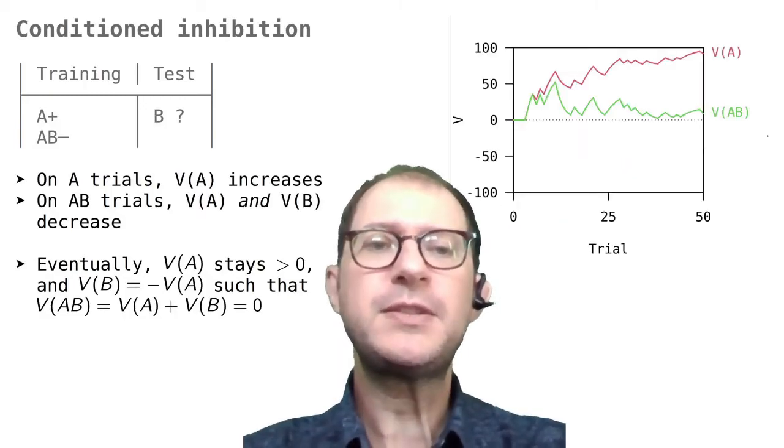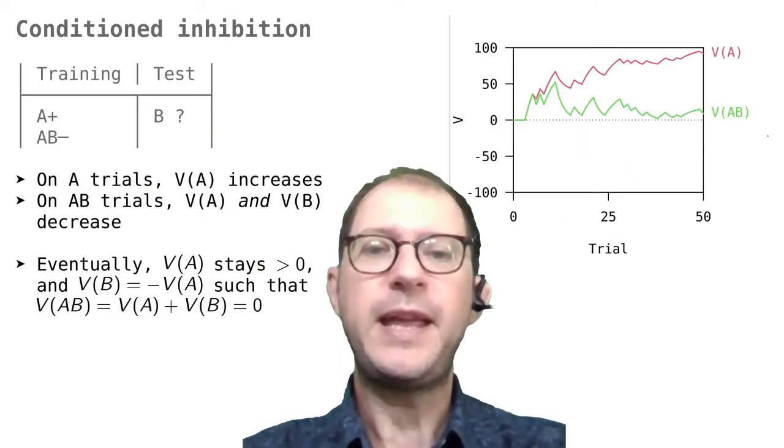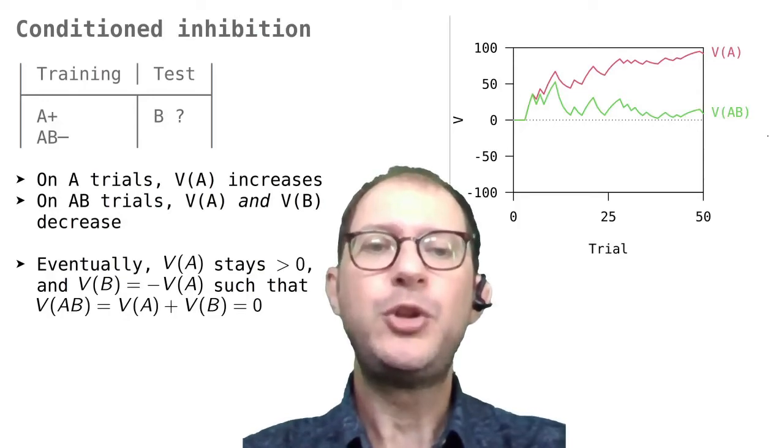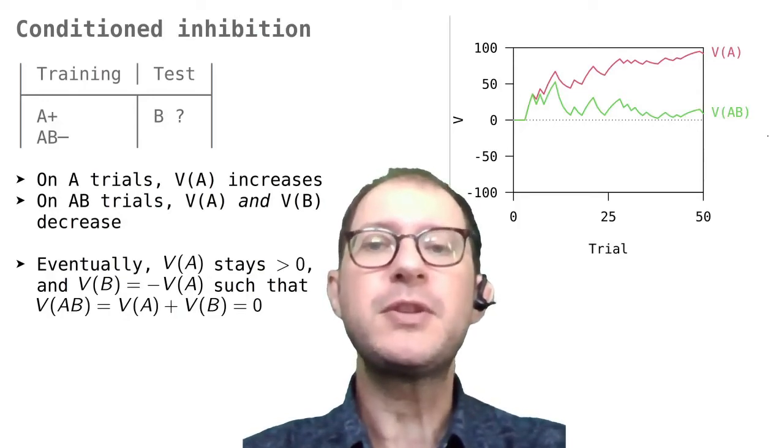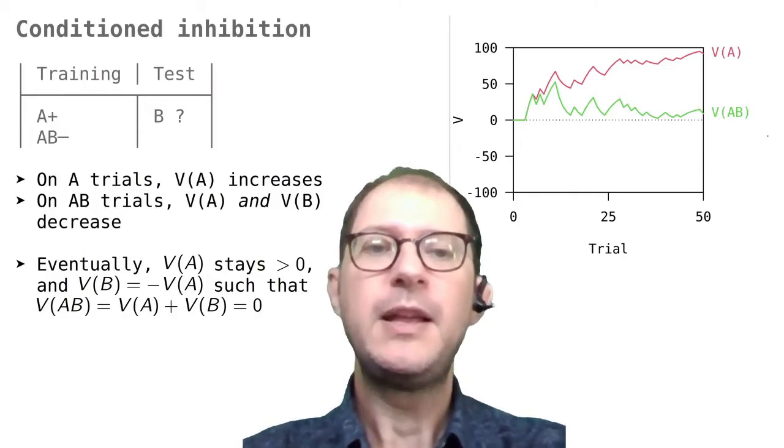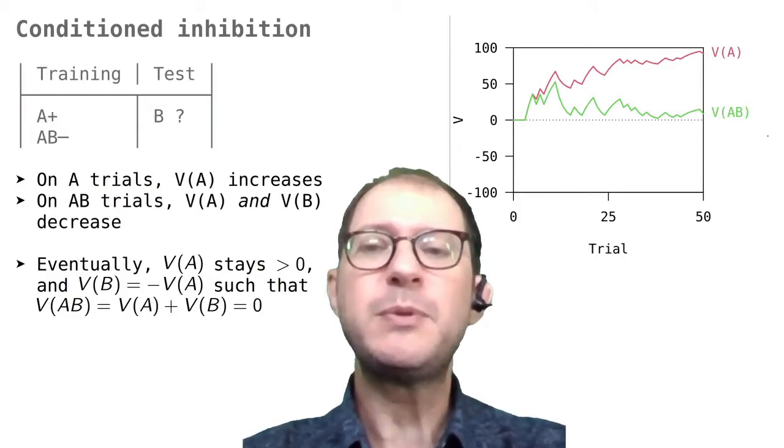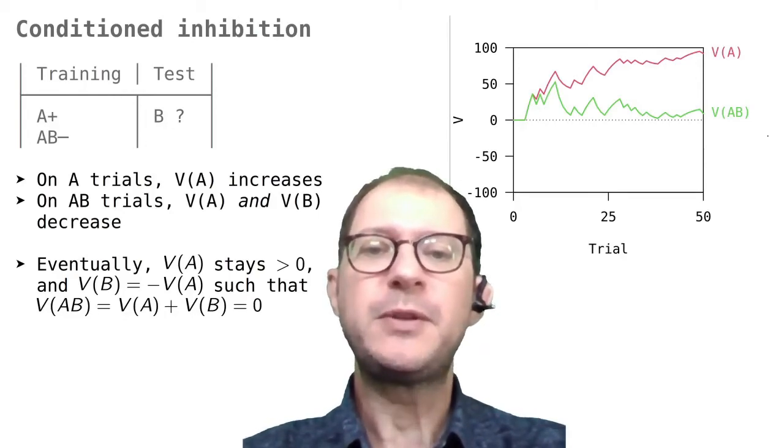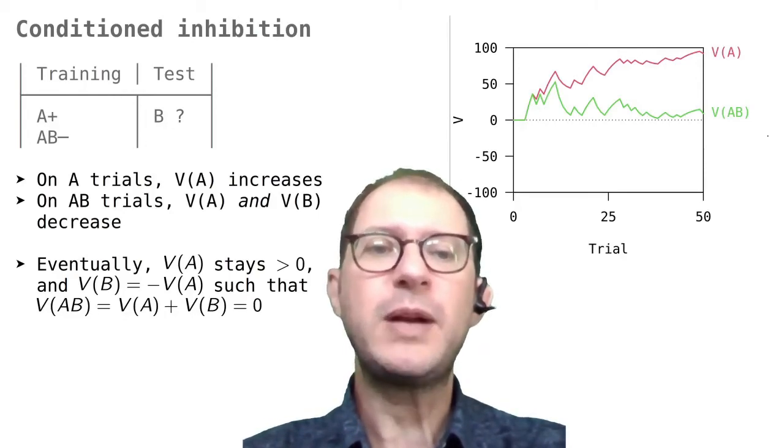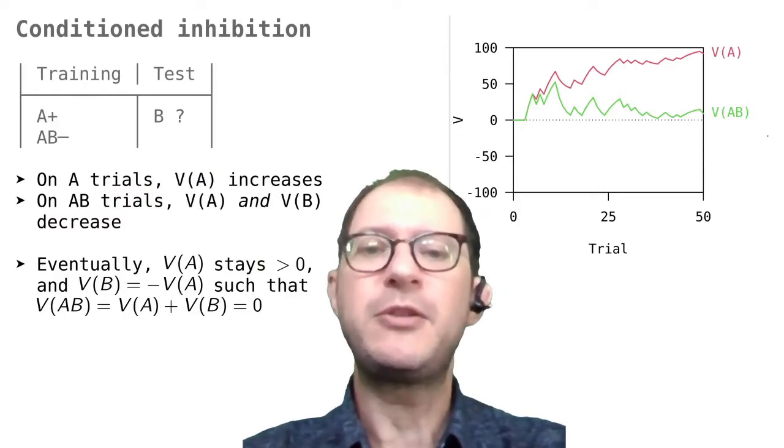This graph shows the associative strength of A in red and of A and B together in green, during a computer simulation of a conditioned inhibition experiment using the Rescorla-Wagner model. The first thing we need to understand is why these lines are jagged, going up and down, while the lines that we saw in the previous examples were smooth and went only up. The reason is that the previous examples involved blocks of trials with just one stimulus or just one combination of stimuli.